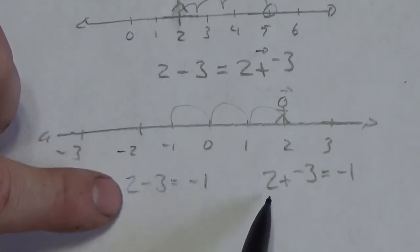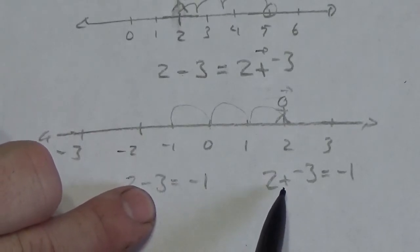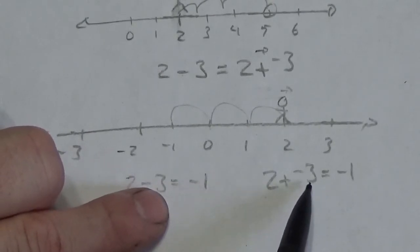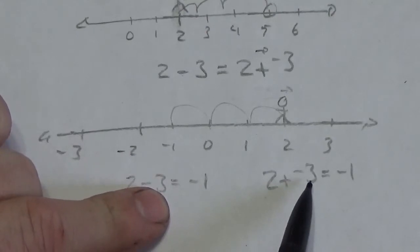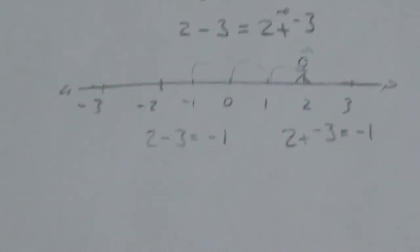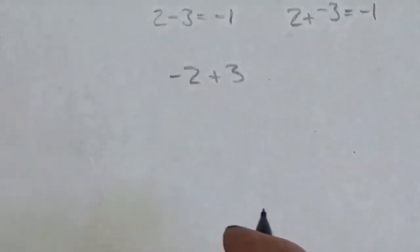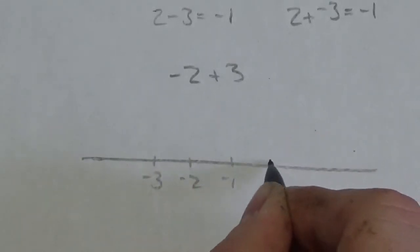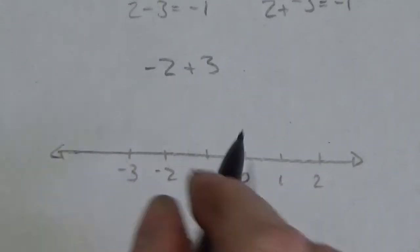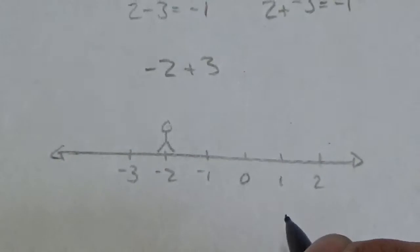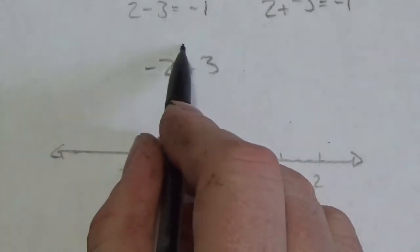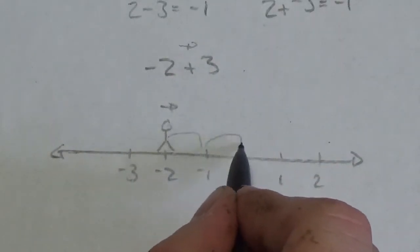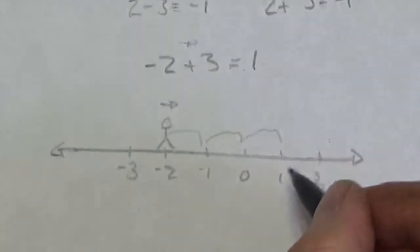So the first number tells you where you start on the number line. The symbol in between — the operation — tells you what direction to face. And then the value tells you two things: whether you're going forward or backward, and by how much. So if we change this to negative two plus three: negative two tells me where I start — I'm standing on negative two. Adding means I face right. Positive three means I go forward one, two, three. So negative two plus three equals positive one.